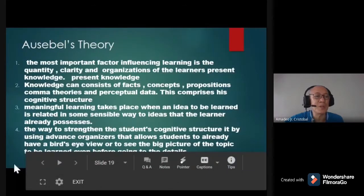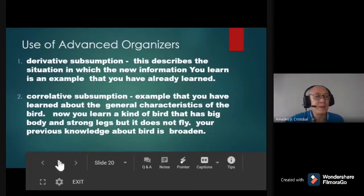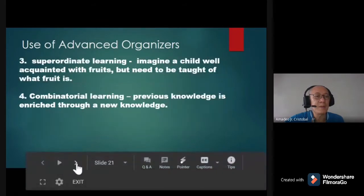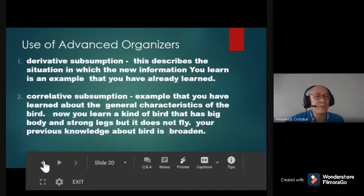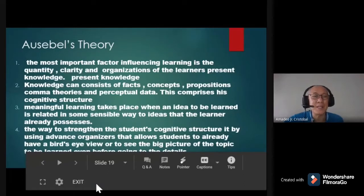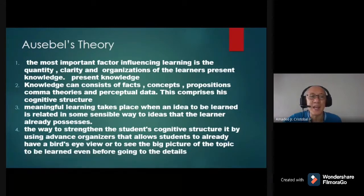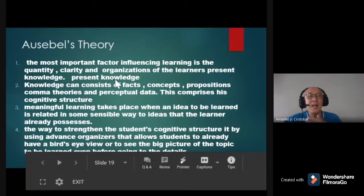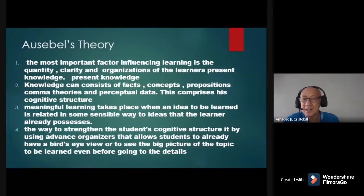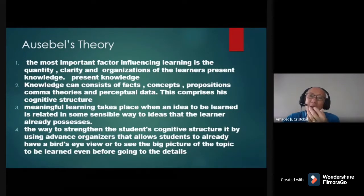What is Ausubel's Theory? Number one: the most important factor influencing learning is the quantity — how much you are going to give — the clarity, and the organization of the learner's present knowledge. According to Ausubel's Theory, in order for students to learn, there must be enough quantity of knowledge given.